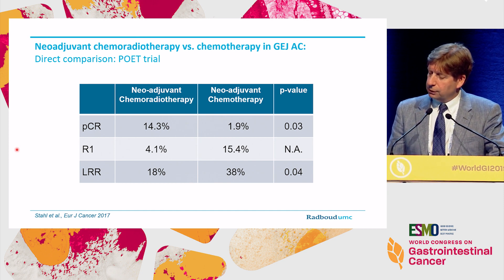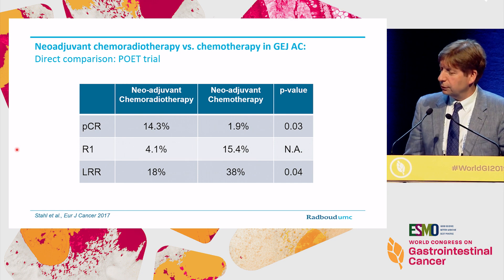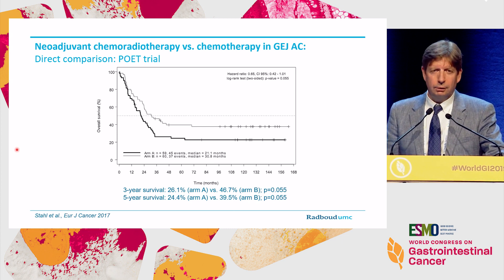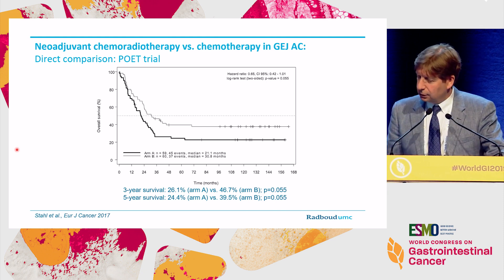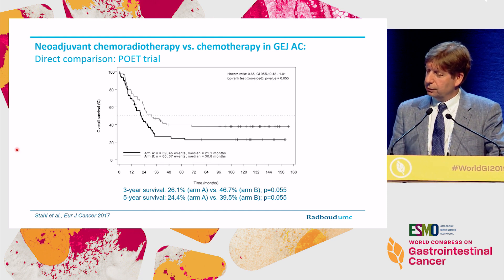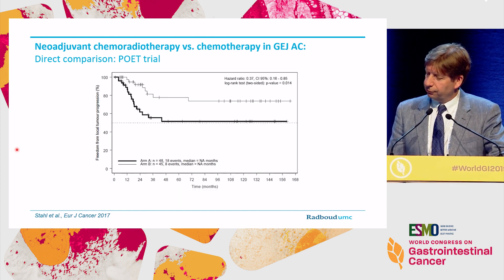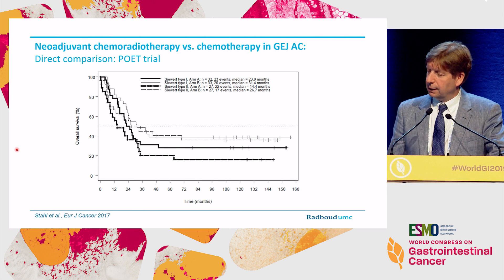In terms of local-regional relapse rates, these were significantly lower in the neoadjuvant chemoradiotherapy arm compared to the neoadjuvant chemotherapy arm. This study did not reach its primary endpoint, mainly because of premature closure due to slow accrual. However, in terms of 3-year and 5-year overall survival, there was a nearly statistically significant difference in favor of the neoadjuvant chemoradiotherapy arm. In terms of freedom from local tumor progression, there was a significant benefit of the pre-op chemoradiotherapy arm, both for Siewert type 1 and type 2, especially type 2.